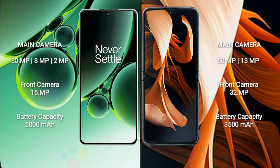OnePlus Nord 3 features a triple rear camera setup: 50MP + 8MP + 2MP, and a 16MP front camera. Motorola Razr features a dual rear camera setup: 50MP + 13MP, and a 32MP front camera.